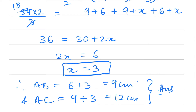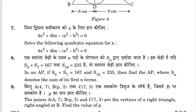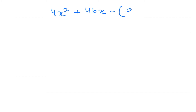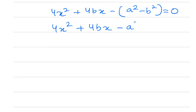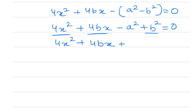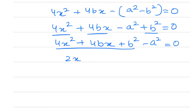Question 7: We are given the quadratic equation 4x² + 4bx − (a² − b²) = 0. Opening the bracket: 4x² + 4bx − a² + b² = 0. Grouping terms: 4x² + 4bx + b² − a² = 0. This can be written as (2x + b)² − a² = 0.